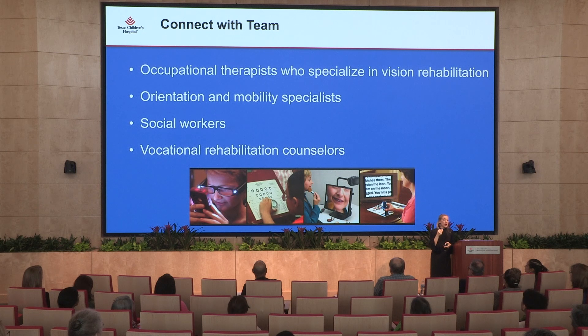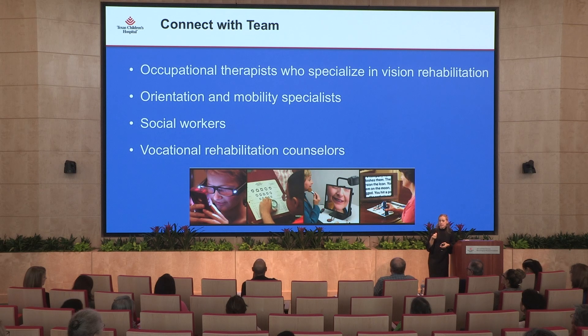There are groups like IBUG, an Apple users group for visually impaired people. Occupational therapists who specialize in vision will even visit the child's home — adding tactile cues to microwave buttons, for example, helping the child navigate their own home. If they have significant vision loss, we get orientation and mobility involved so they can learn to use a cane. Social workers and vocational rehabilitation counselors through the state are also part of the team.